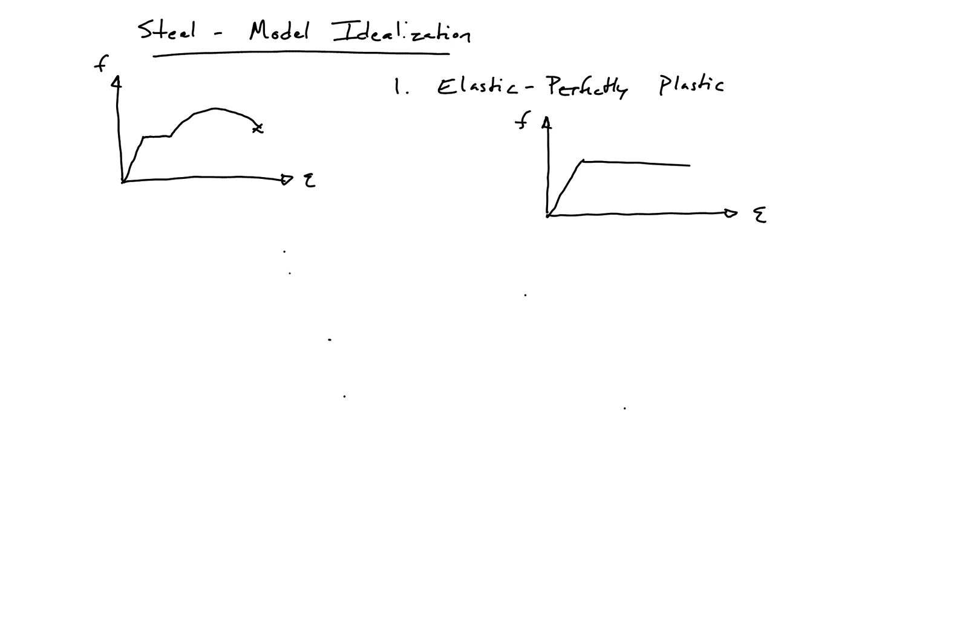The second idealization is what we call a trilinear approximation. The trilinear approximation has three regions, as its name would suggest.